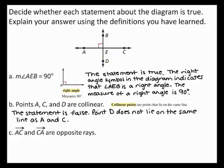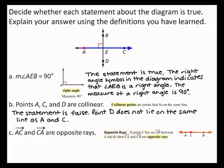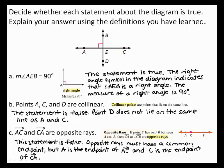In part C, to determine whether ray AC and ray CA are opposite rays, first locate them on the diagram. By the definition of opposite rays, two rays are opposite rays if they have a common endpoint and are collinear. From the diagram, the endpoint of ray AC is A and the endpoint of ray CA is C, so they do not share a common endpoint. Therefore, this statement is false.